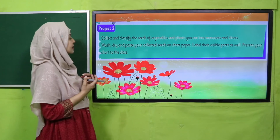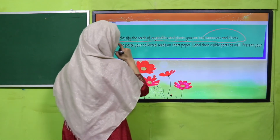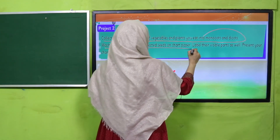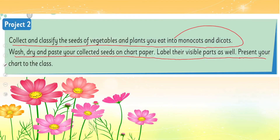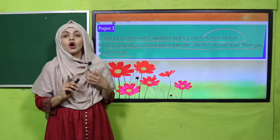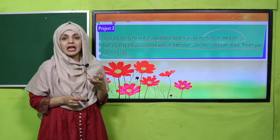Project number two: Collect and classify seeds of vegetables and plants you eat into monocot and dicot. Wash, dry, and paste your collected seeds on chart paper. Label their visible parts as well and present your chart in class. Save seeds from fruits and vegetables you eat, wash them, dry them, paste them on chart paper, label them as monocot or dicot, and label their visible parts.